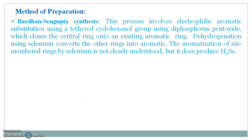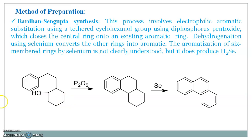The next one is the Bardhan-Sengupta synthesis, which is the classic way to make phenanthrene. This process involves electrophilic aromatic substitution using a tethered cyclohexanol group with phosphorus pentoxide (P₂O₅), which closes the central ring onto an existing aromatic ring. Dehydrogenation using selenium converts the other rings into aromatic rings as well, though the aromatization of the six-membered ring by selenium is not clearly understood. The tethered cyclohexanol closes this ring to the aromatic ring, and on further dehydrogenation it gives phenanthrene.